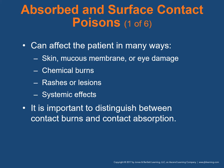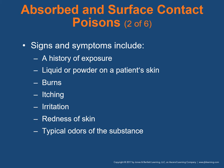Poisons absorbed through skin and surface contact affect the skin, mucous membranes, the linings of the mouth and nose, or through the eyes. Chemical burns are a type of poisoning. Signs and symptoms include rashes, lesions, systemic effects. It's important to distinguish between contact burns and contact absorption. Signs and symptoms include a history of exposure, liquid or powder on the patient's skin, burns, itching, irritation, redness. Remove clothing and look. Also note typical odors of the substance.